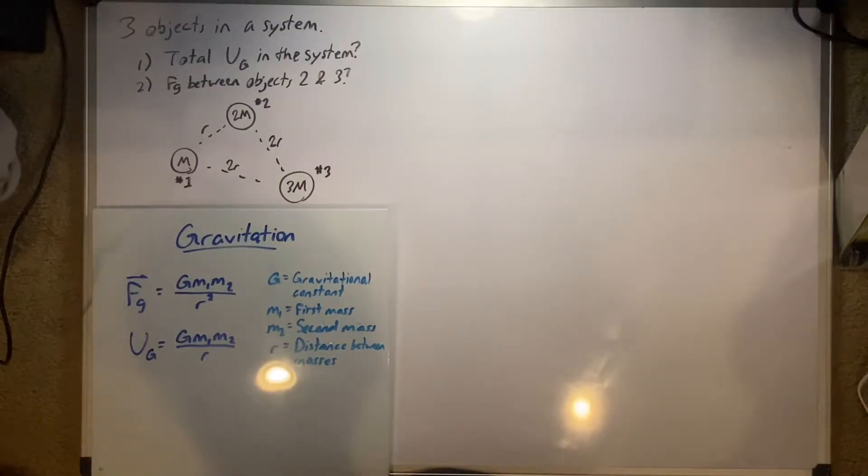Alright, so we have three objects in this system. We are asked to find the total gravitational potential energy in the system and the force of gravity between objects number 2 and 3.